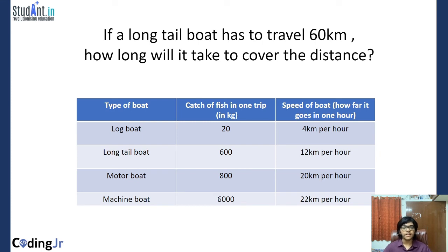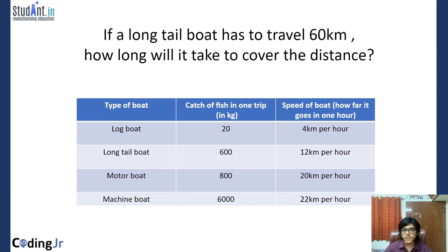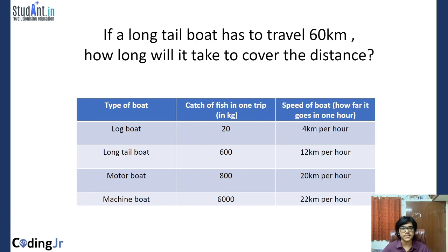Question number two: if a long tail boat has to travel 60 kilometers, how long will it take to cover the distance? From the table, a long tail boat travels at a speed of 12 kilometers per hour, and the distance is 60 kilometers. We want to find the time, so we use the formula: time equals distance divided by speed. Distance is 60 and speed is 12, so time equals 60 divided by 12, which is five hours. Hence the long tail boat takes five hours to travel 60 kilometers.